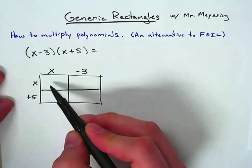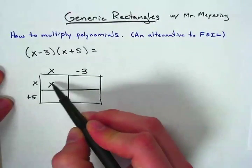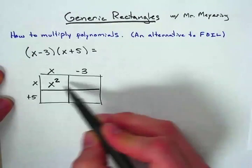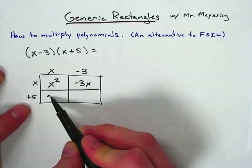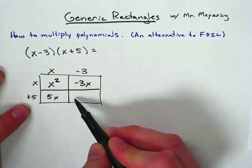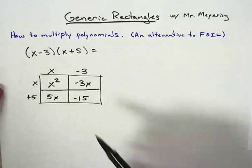Within each of these rectangles, you're going to multiply to get the area of that rectangle. x times x is x squared. Negative 3 times x is negative 3x. 5 times x is 5x, and 5 times negative 3 is negative 15. That is the multiplication of all those parts.